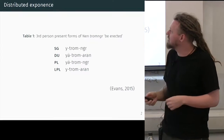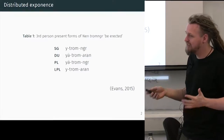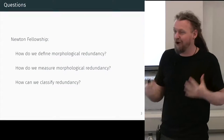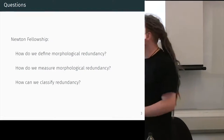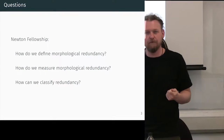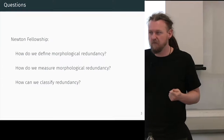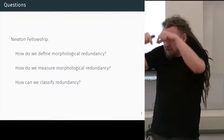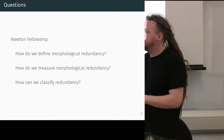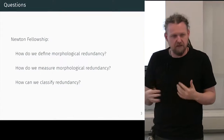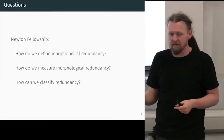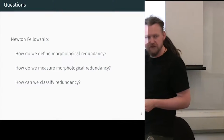This raises a whole bunch of questions. The ones I've been working on for the past two years are these three: What does it mean to say that some morphological formative is redundant — how do we define redundancy? What does it mean to say that one piece is maybe more redundant than another — how do we measure redundancy? And is there any inherent structure to the logic of redundancy that can create a possibility space — how do we classify redundancy? What's the typology of redundancy?